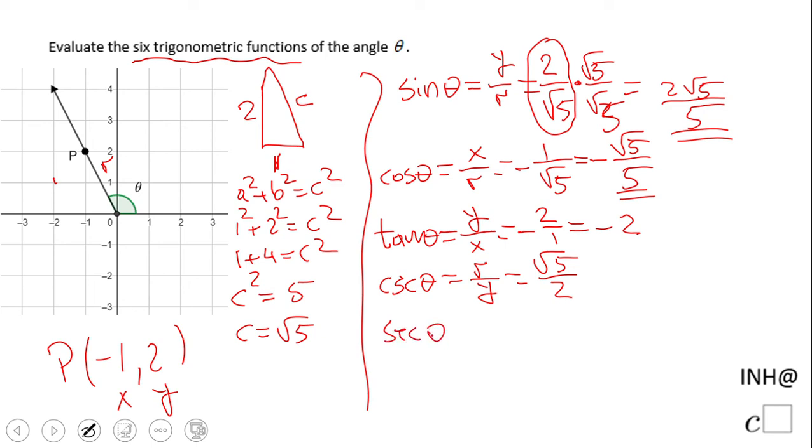Secant of theta will be the reciprocal of cosine, so it's gonna be r over x, and we're gonna flip this to get -√5 over 1, or just -√5.